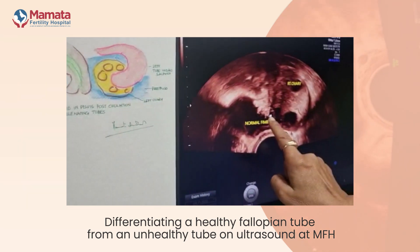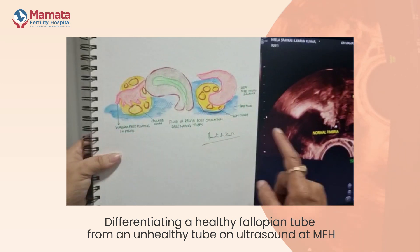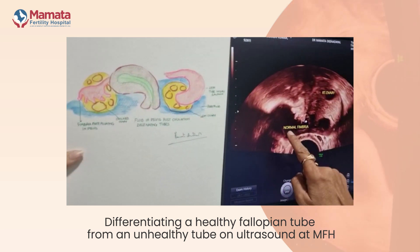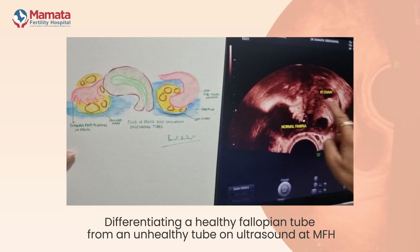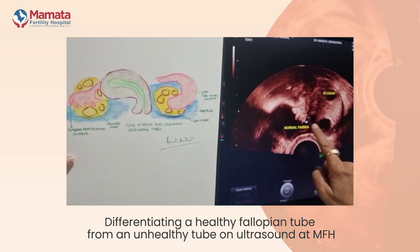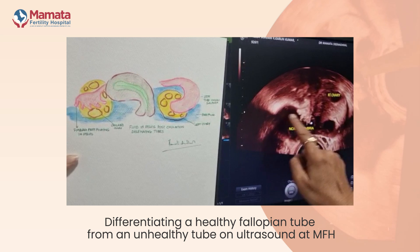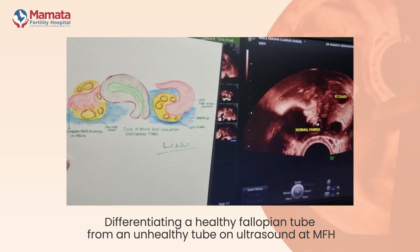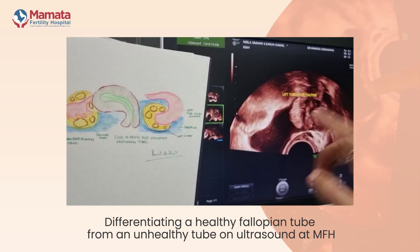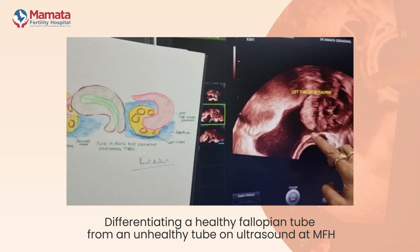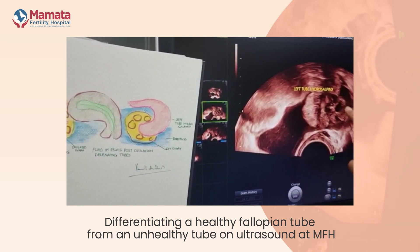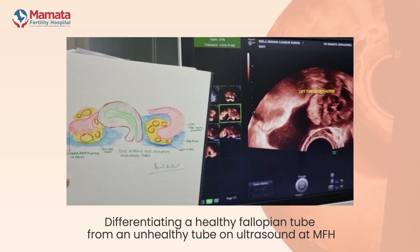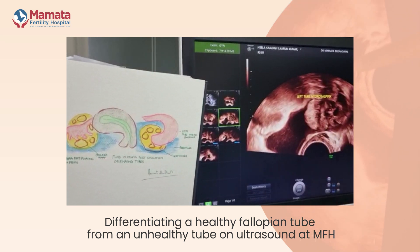This is a diagrammatic representation of the free floating fimbria which you can see. The presence of fluid following ovulation in the pelvic cavity has actually delineated the tube on the right side. These are follicles that ovulated. The fluid is actually delineating the fimbria very clearly as depicted here. On the left side, this is the tube which looks like a hydrosalpinx with a blunt fimbria, and that is the ovary that ovulated, and that is the fluid. The presence of fluid is a good basis on which you can delineate tubal pathology post-ovulatory.